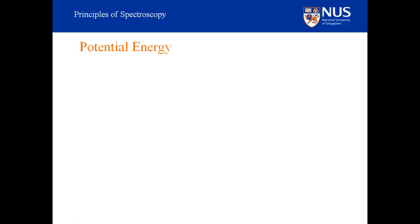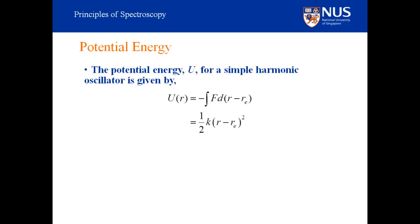What is the potential energy for a simple harmonic oscillator? Energy equals force times distance, but here our force depends on distance, so we need to integrate the force with respect to distance. The potential energy equals minus the integral of the force with respect to distance from equilibrium. Substituting f equals minus k times (r minus Re) and integrating gives the familiar result: potential energy equals one-half k x squared, where x is the displacement r minus Re.